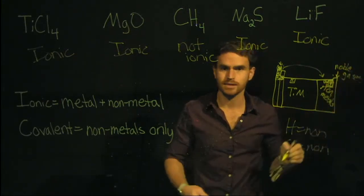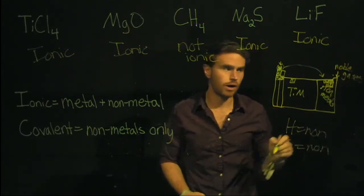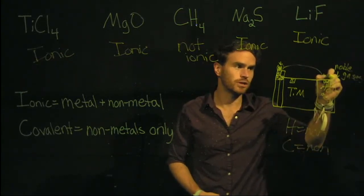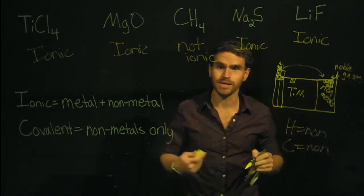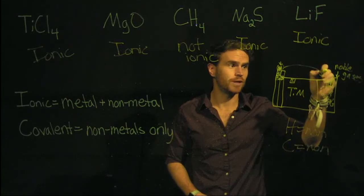Noble gases include helium, xenon, argon, etc. And then the halogens, which are going to be where fluorine, chlorine, bromine, iodine are. Those are called halogens.